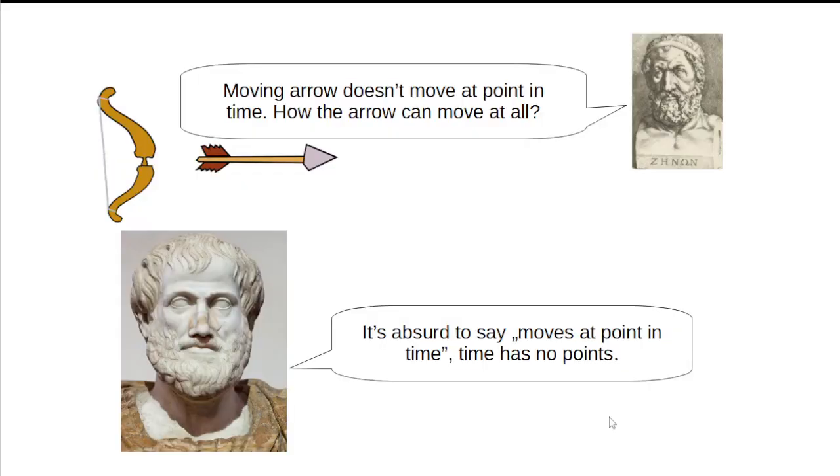Aristotle has imagined time per analogy to the length, and this hindered him from comprehension of instantaneous velocity, velocity at a specific point of time. This is precisely his answer to Zeno's arrow paradox. Trying to answer how it is possible that a moving arrow does not move at any point in time, Aristotle concludes that time has no points, so the question is absurd. Conclusion of this argument is that instantaneous velocity is inconsistent as well.